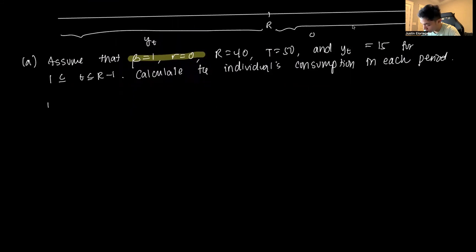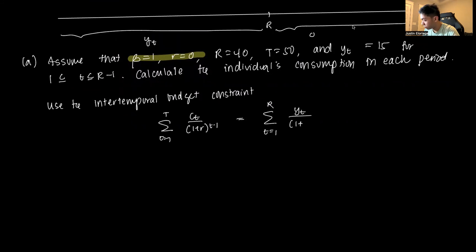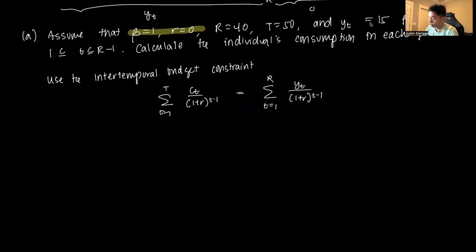To calculate the consumption in each period, we use the intertemporal budget constraint. That's given as sum from t=1 to T of Ct/(1+R)^(t-1) equals sum from t=1 to R of Yt/(1+R)^(t-1). Let's rewrite this to R.